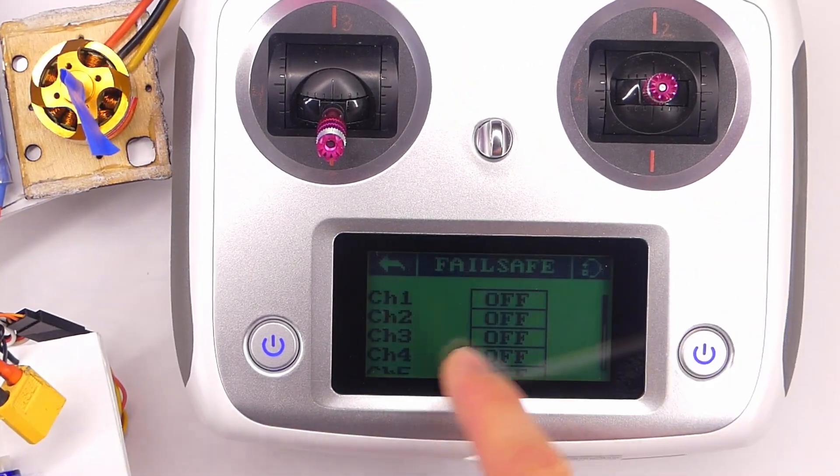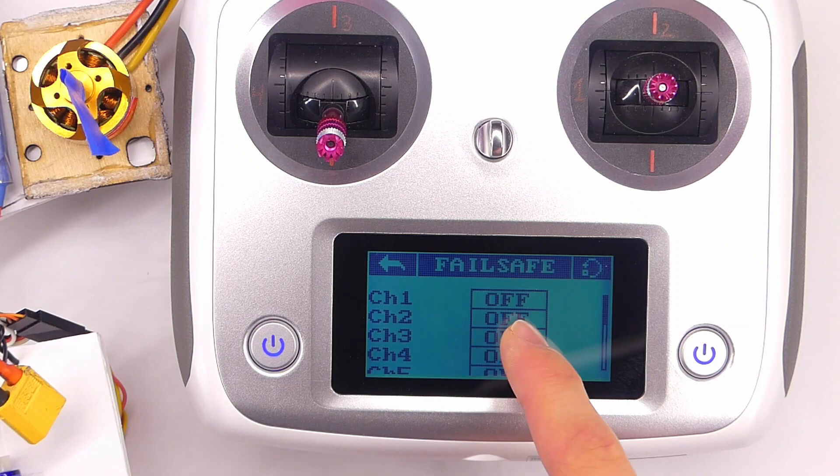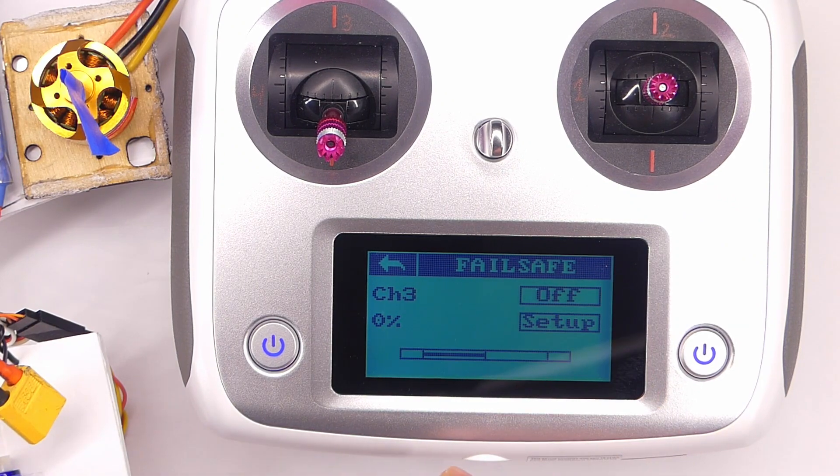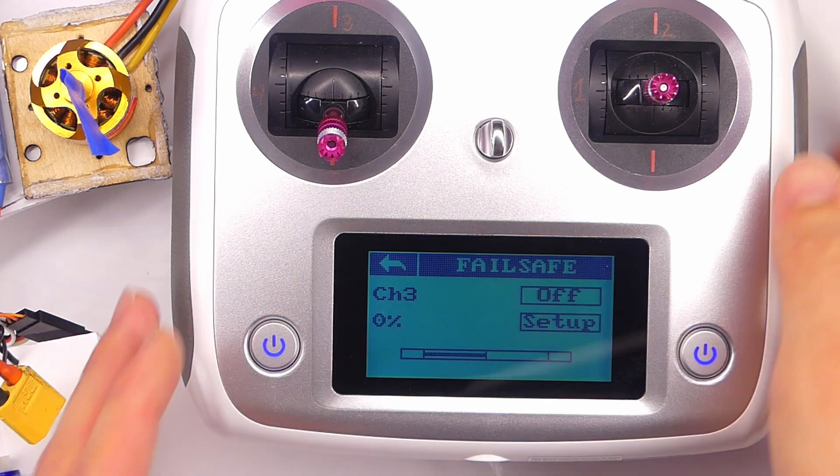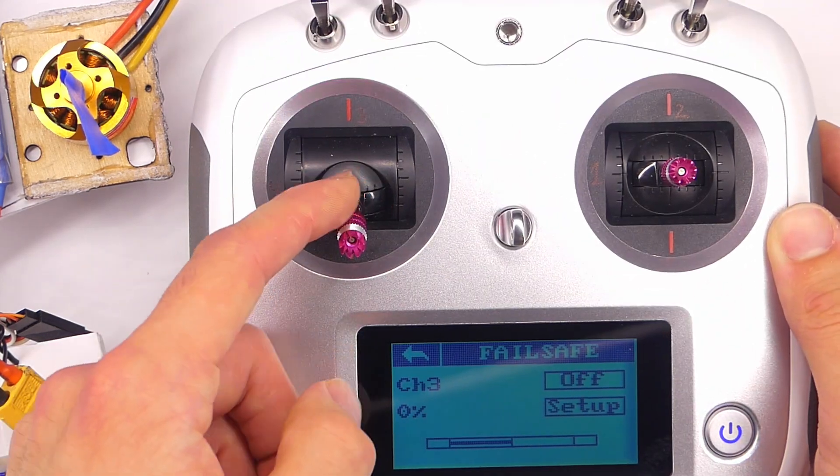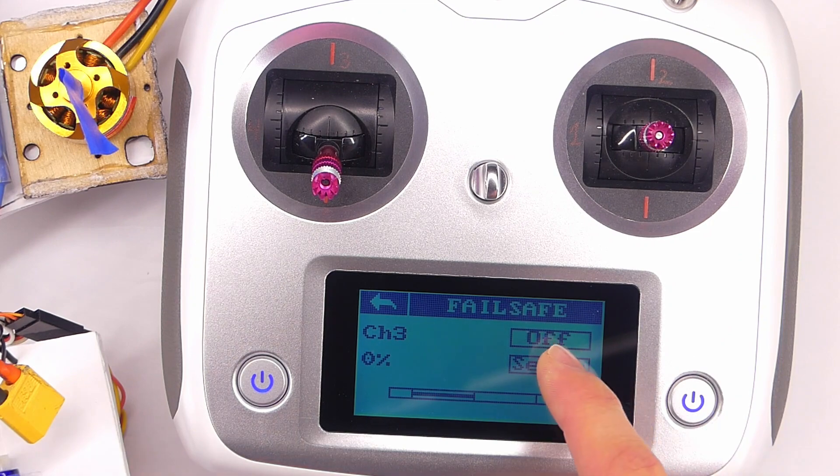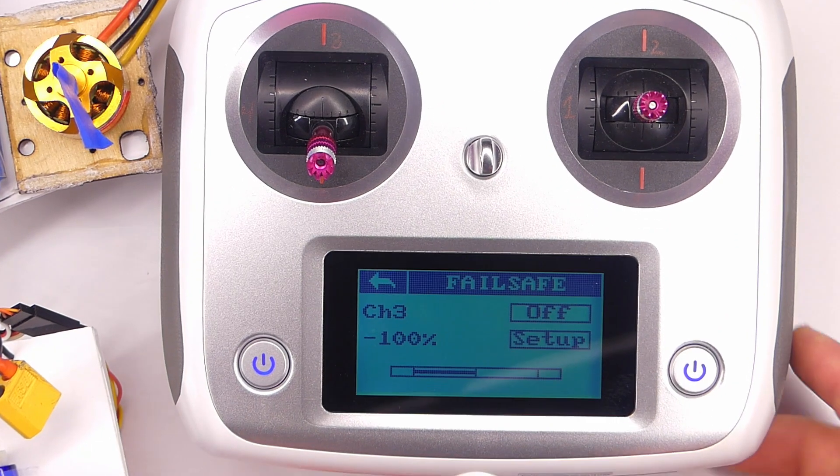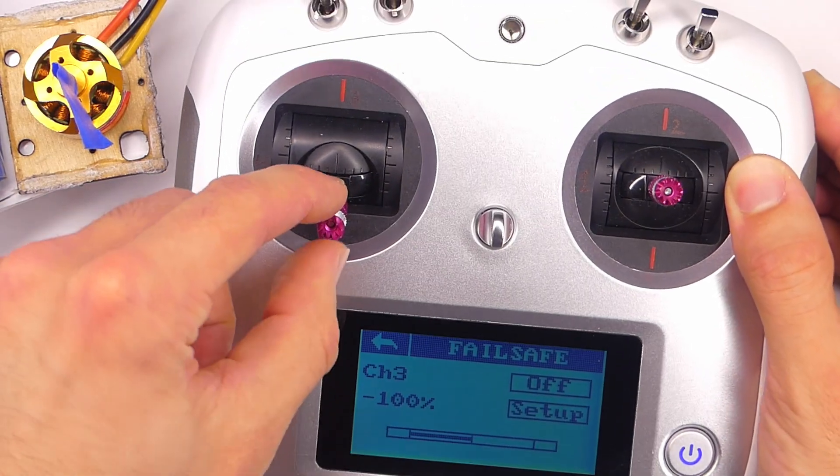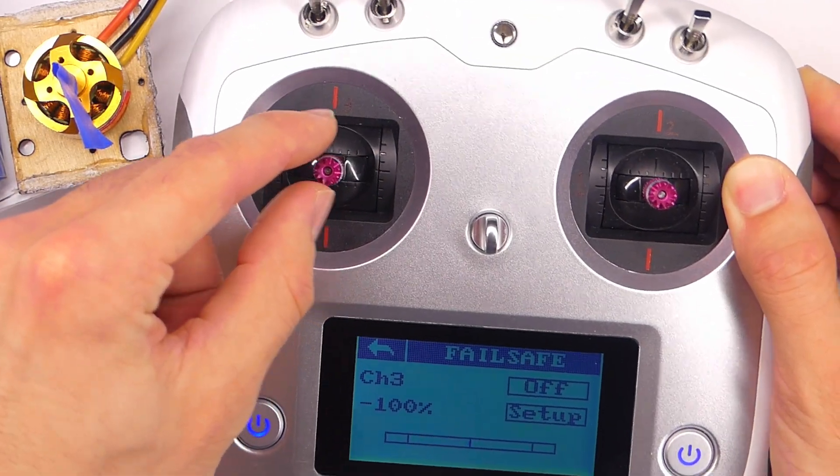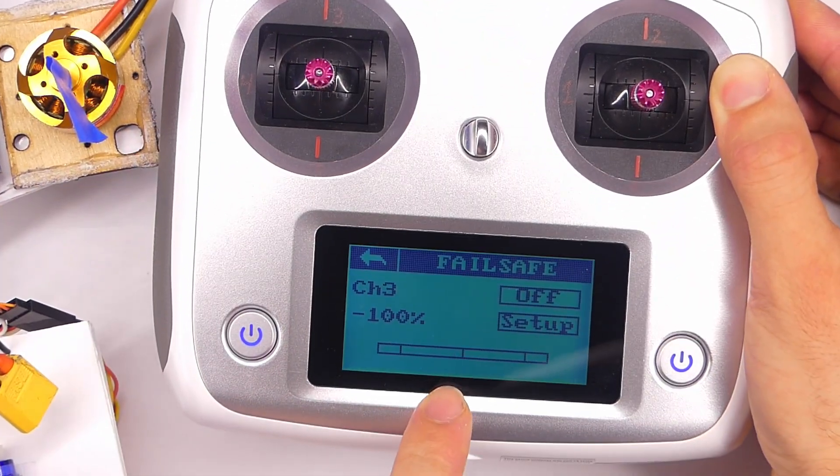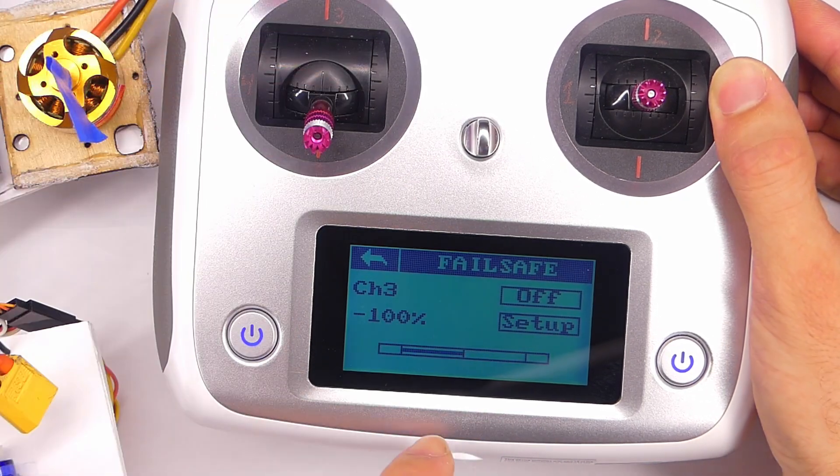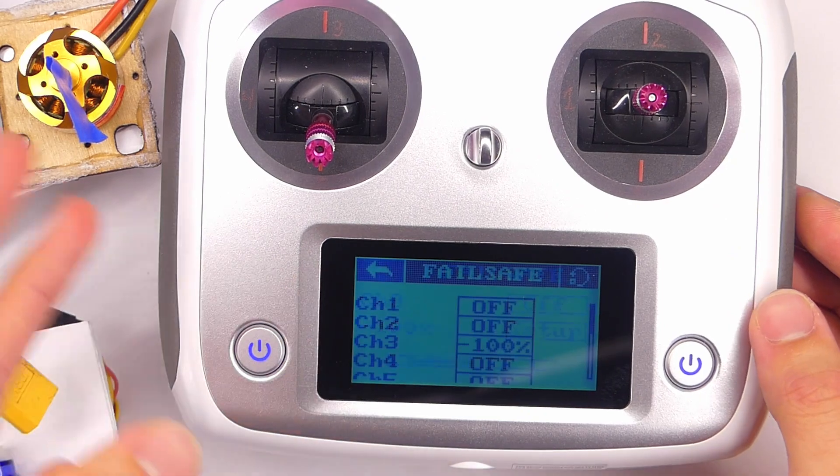So we are going to tap on channel 3. We want to tap on, and then with our throttle stick in the zero or the off position, we want to tap setup and then it says negative 100. And that's what we want because the middle position would be zero. And then as you can see on this little bar here, the top position is full power. So we want negative 100. That's all the way off. Now we can just back out of there.